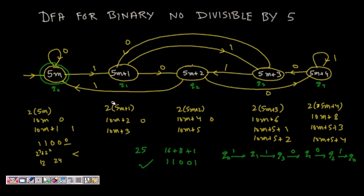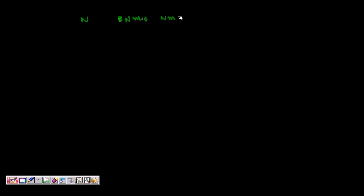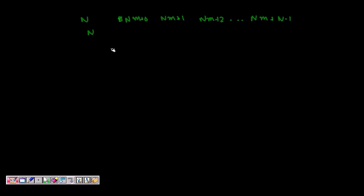You can now understand how to construct DFAs for accepting strings divisible by 3, 5, 4, or any number N. For divisibility by N, you will have N states — Nm+0, Nm+1, Nm+2, ..., Nm+(N−1) — and you draw the transitions for each of those N states.